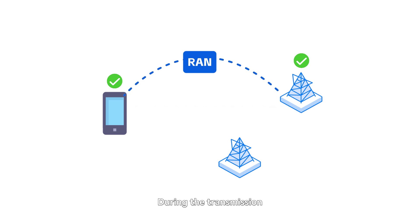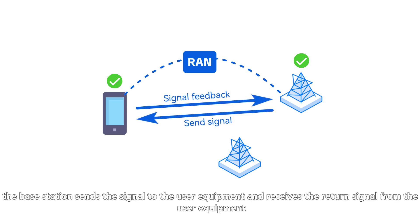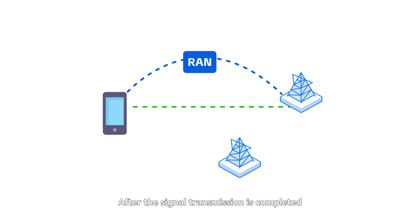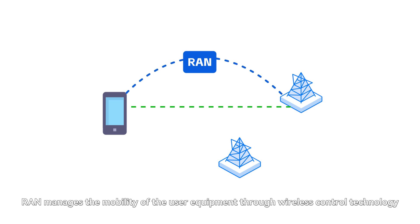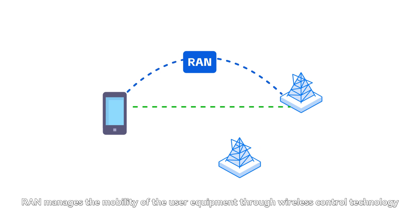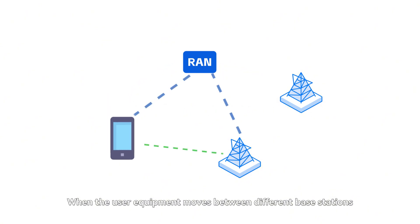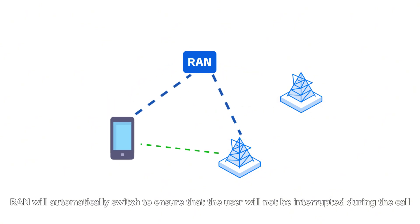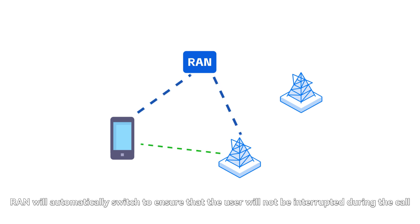During the transmission, the base station sends the signal to the user equipment and receives the return signal from the user equipment. After the signal transmission is completed, RAN manages the mobility of the user equipment through wireless control technology. When the user equipment moves between different base stations, RAN will automatically switch to ensure that the user will not be interrupted during the call.